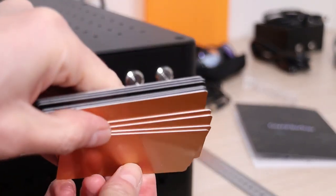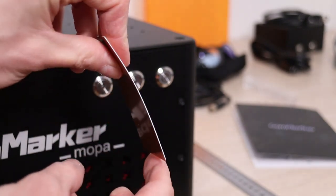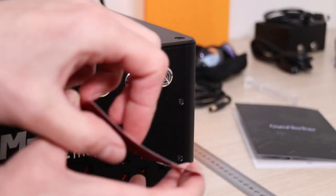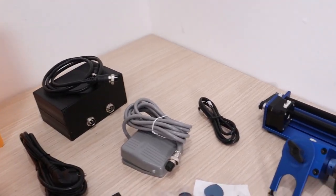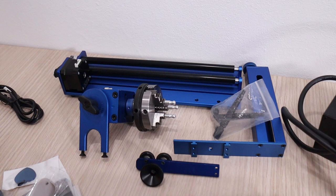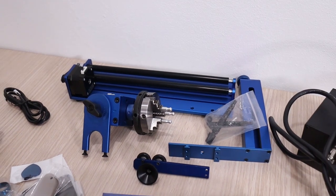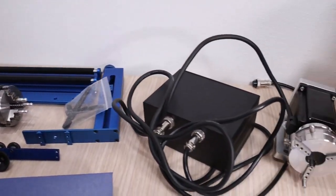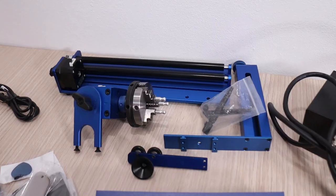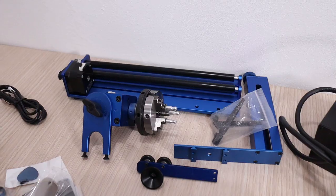You also get a set of sample materials and aluminum business cards, which are much thicker than the usual paper-thin cards that come with other machines. I have ordered the more advanced rotary system, which is supposed to be better at engraving larger cylinders compared to the rotary I got with the 20-watt Commarker B4. I will be testing this rotary in one of my next videos.